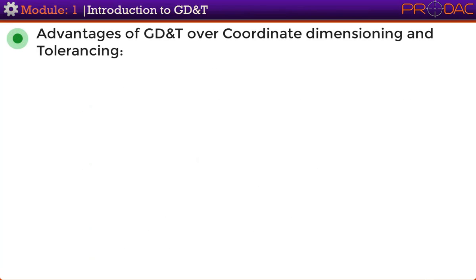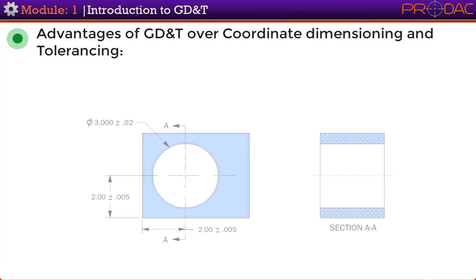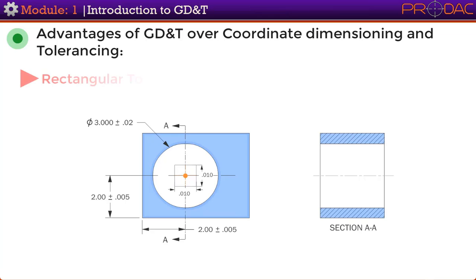Next we'll focus on the advantages of GD&T over coordinate dimensioning and tolerancing. Since the middle of the 19th century, industry has been using the plus/minus tolerancing system for drawings, but this system has several limitations. Conventional tolerancing generates rectangular tolerance zones, which do not have a uniform distance from the center to the outer edge.